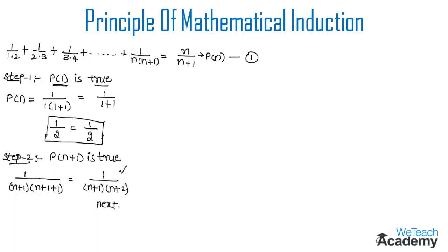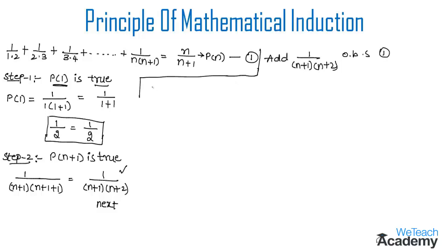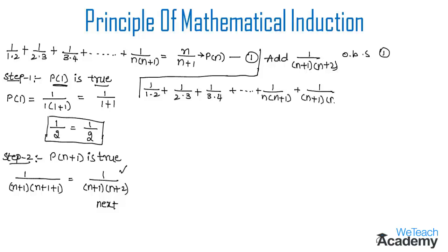We add the next term 1/((n+1)(n+2)) to equation 1, giving: 1/(1·2) + 1/(2·3) + 1/(3·4) + ... + 1/(n(n+1)) + 1/((n+1)(n+2)) = n/(n+1) + 1/((n+1)(n+2)).